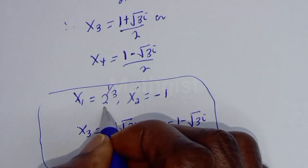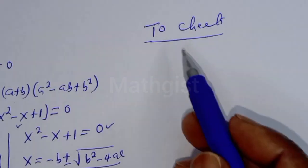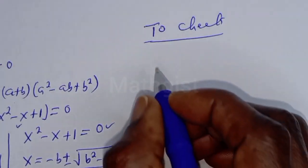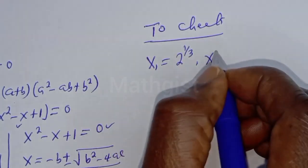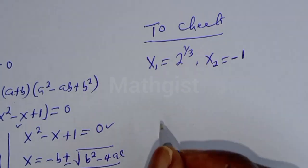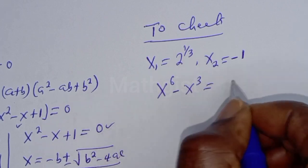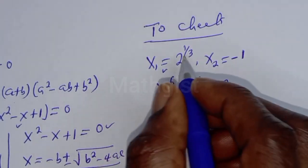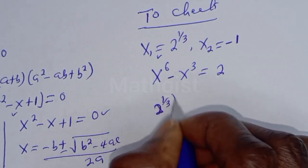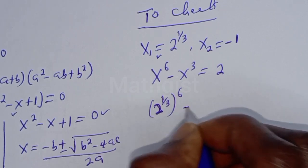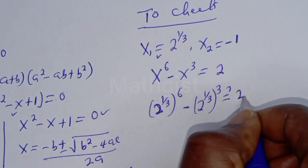The only solutions are s1 and s2. Let's check to confirm if our answer is correct. We can check using s1 which is equal to 2 raised to the power 1 over 3, and s2 which is equal to minus 1. The equation given is s raised to power 6 minus s raised to power 3 is equal to 2. When s is 2 raised to the power 1 over 3, we have 2 raised to the power 1 over 3, to the power 6, minus 2 raised to the power 1 over 3, to the power 3, must equal 2.